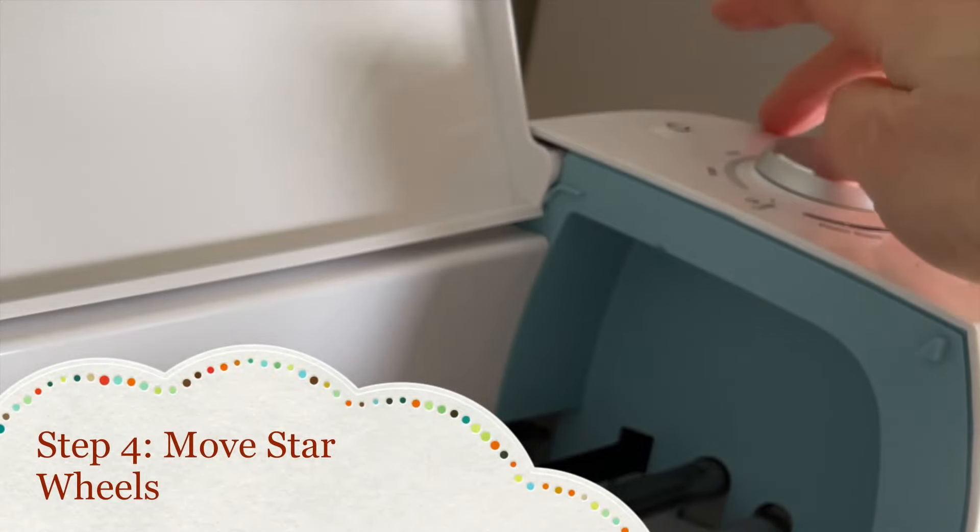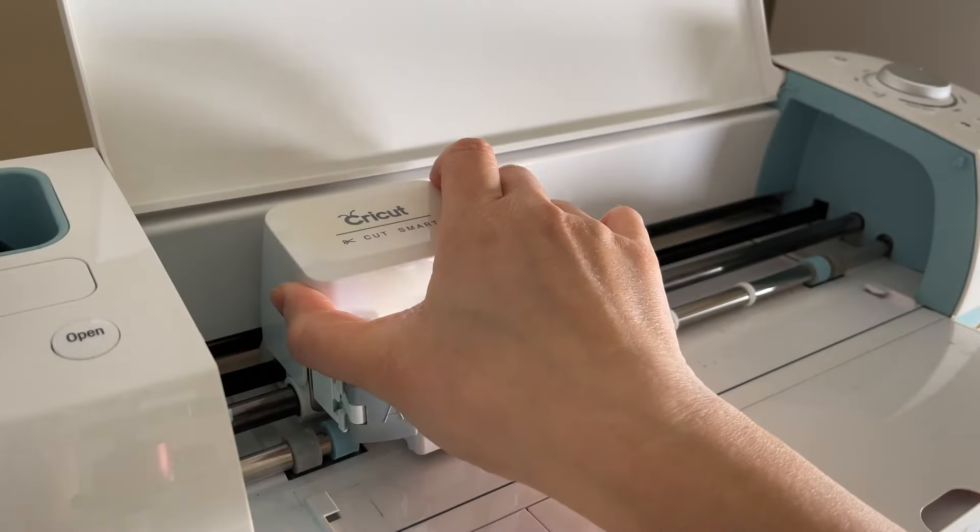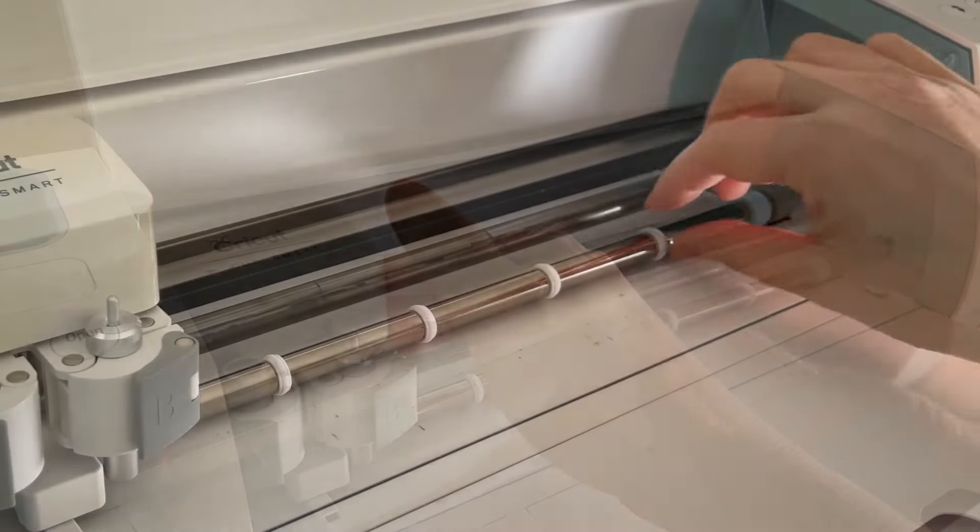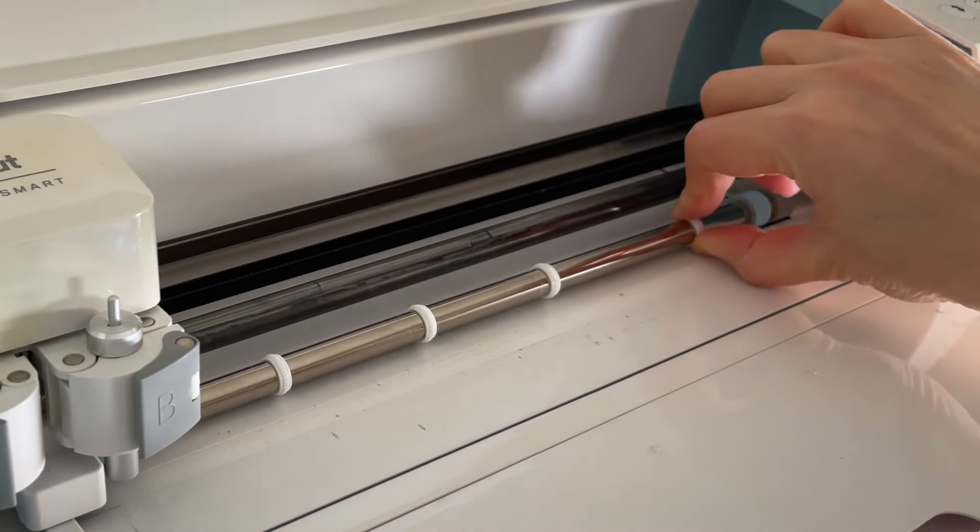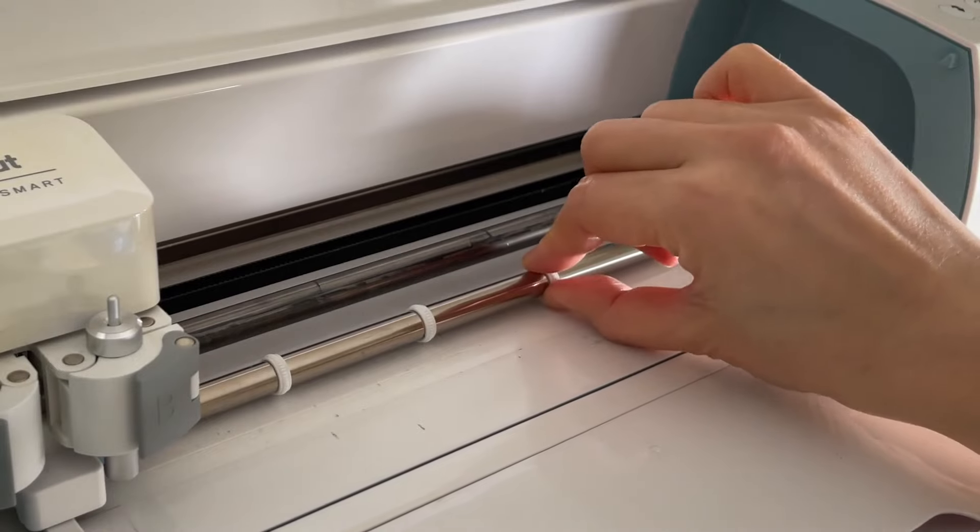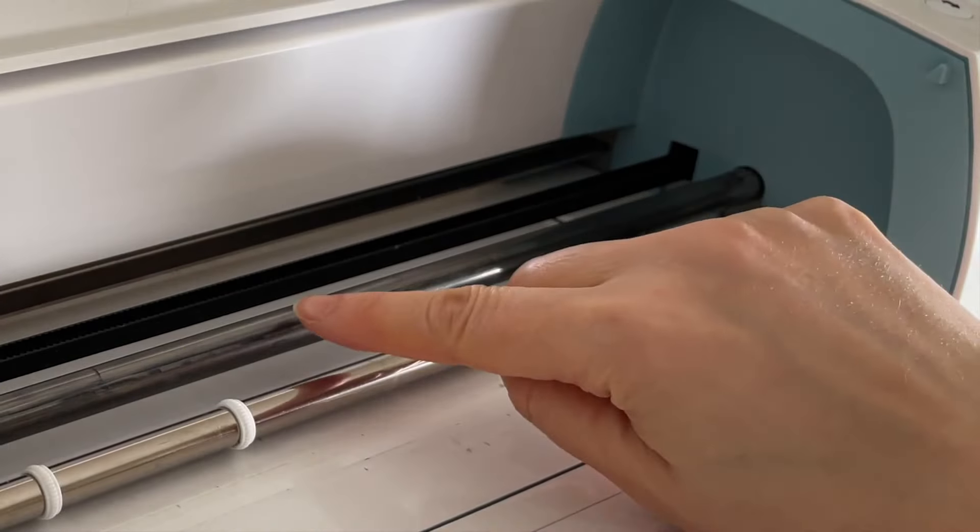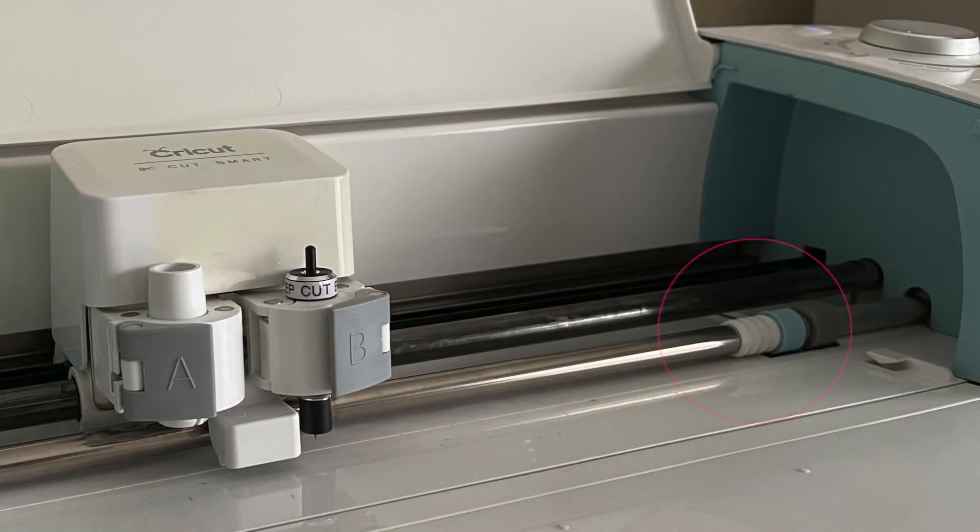Step four turn off the Cricut. Now you can move the carriage out of the way to access the star wheels and you can move it either to the left or right. Grab a star wheel and gently move it to the right. It took a bit of effort the first time and I would avoid touching the roller on the back. I had to wash my hands quite thoroughly after that.